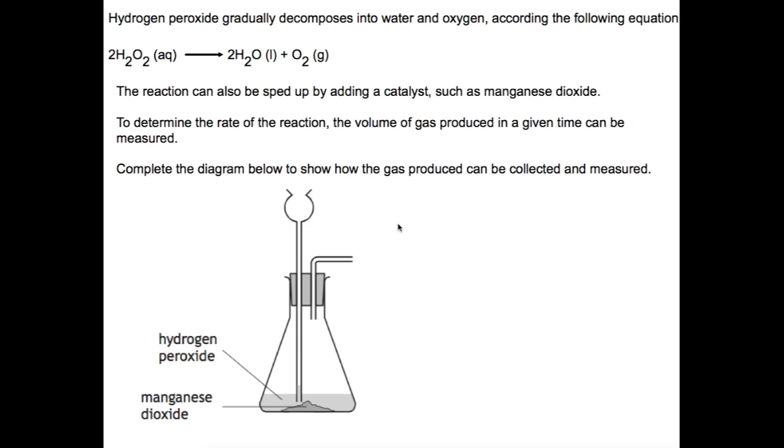Now generally they'll tell you this in the question or it may be that you're using a gas that you have dealt with before. Here the gas that we're producing is oxygen so we could bubble this through water into a measuring cylinder or we could collect it in a gas syringe. I'm going to show you both versions.